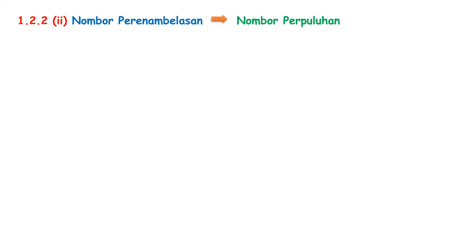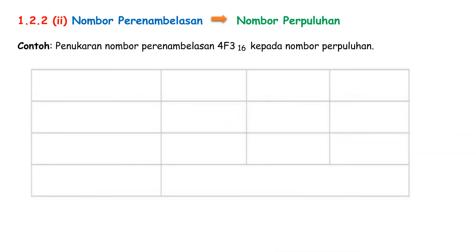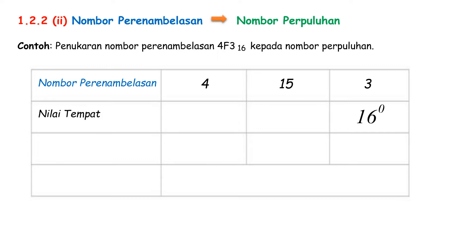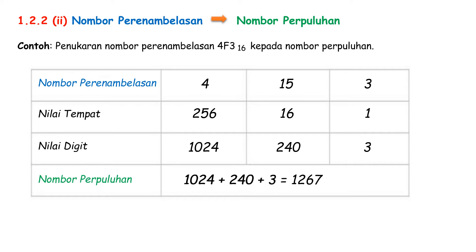Conversion of Nombor Perenamblasan to Nombor Perpuluhan. Let us look at another example. Convert the Nombor Perenamblasan 4F3 to Nombor Perpuluhan. First, draw out a table. After that, write down the Nombor Perenamblasan 4F3. Then, write down the Nilai Tempat from right to left. Nilai Tempat for Nombor Perenamblasan is base 16 with the exponent starting from 0 and incrementing by 1. So, 16 to the power of 0 is 1, 16 to the power of 1 is 16, 16 to the power of 2 is 256. Nilai Digit is Nombor Perenamblasan times Nilai Tempat. Lastly, Nombor Perpuluhan is add up all the Nilai Digit. Therefore, the Nombor Perenamblasan 4F3 is Nombor Perpuluhan 1267.